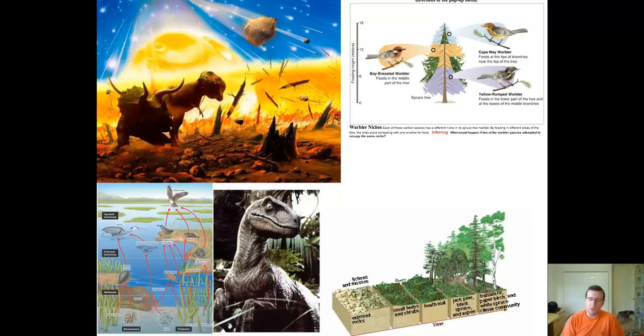So what the mass extinctions do is it erases the old life and gives opportunity for new life to come by. So yes, in fact, if you look at the biodiversity levels of the Earth, biodiversity has been increasing throughout time even though several mass extinctions have taken place.